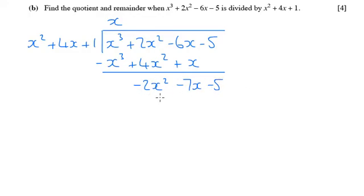We divide -2x² by x² which is -2. And then we times -2 by each of these three things. So that's -2x², -8x and -2.